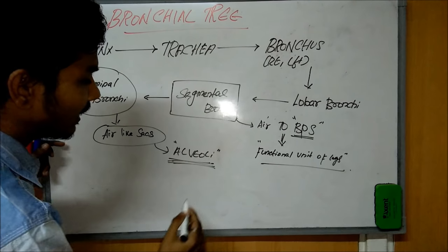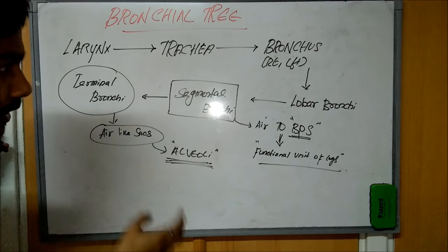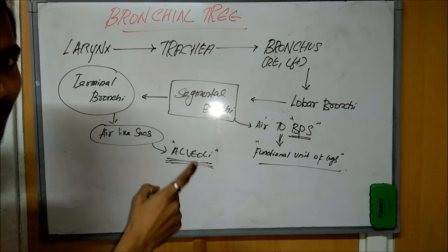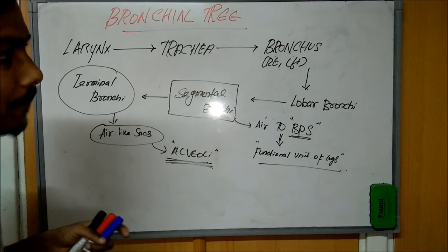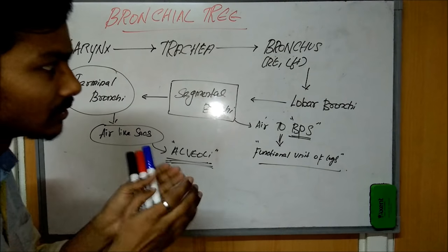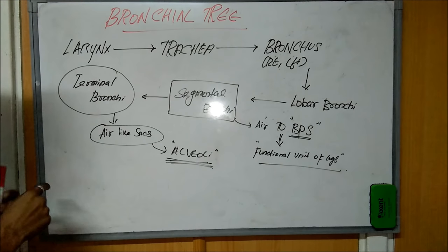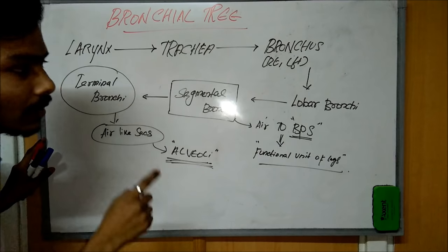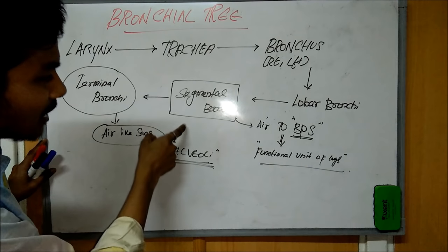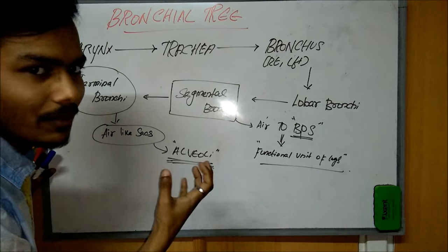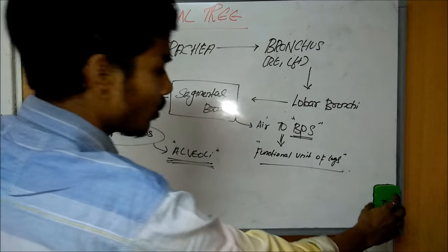To summarize the bronchial tree: it starts from the larynx, connects to the trachea, then the bronchus divides into left and right bronchi going to each lung. Inside the lung it divides into lobar bronchi, then segmental bronchi. The segmental bronchopulmonary segment is the functional unit of the lung, and it ends in alveoli, the sac-like structures for gas exchange.